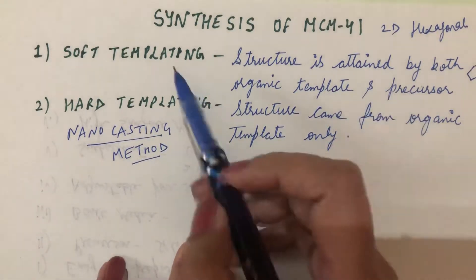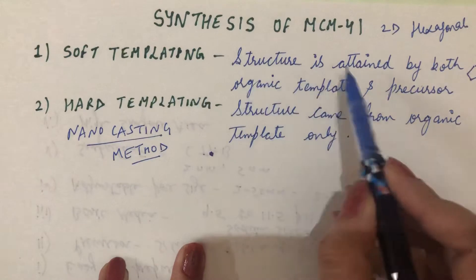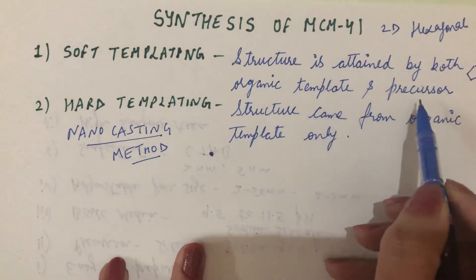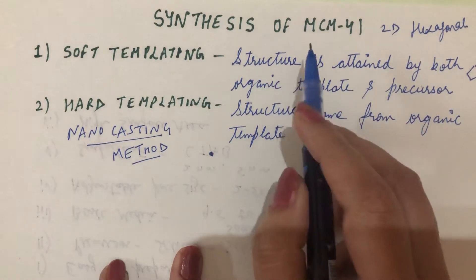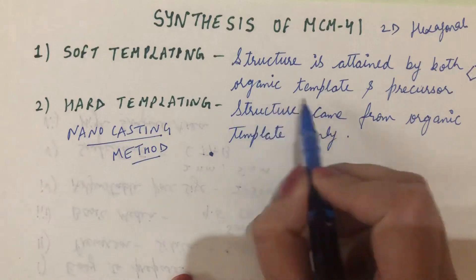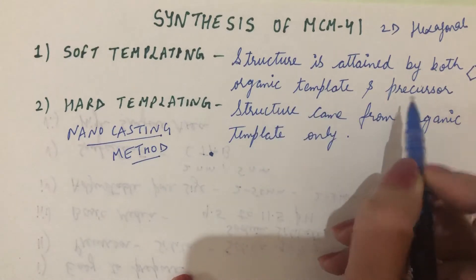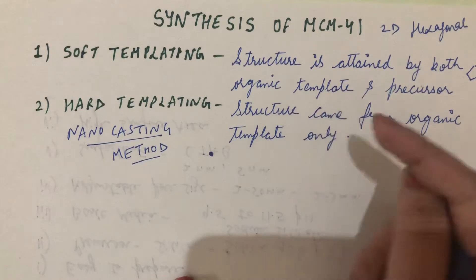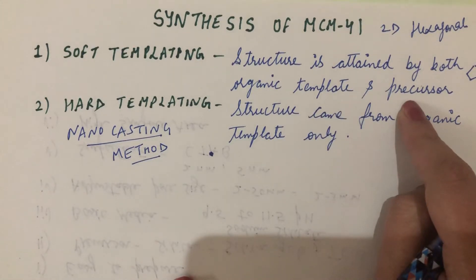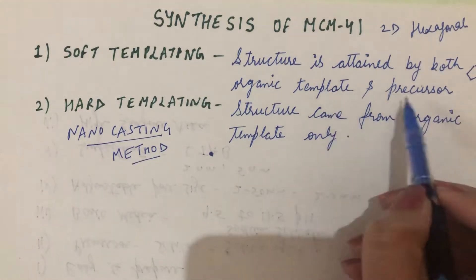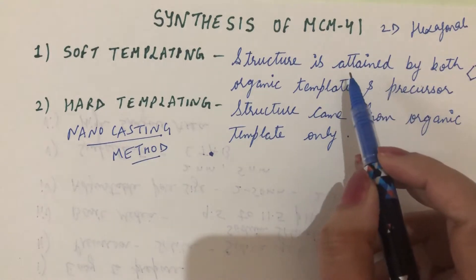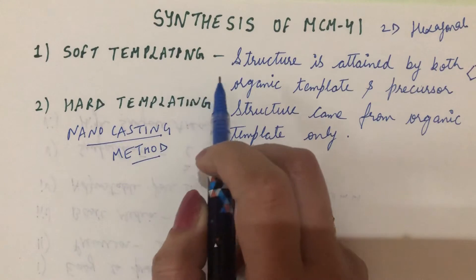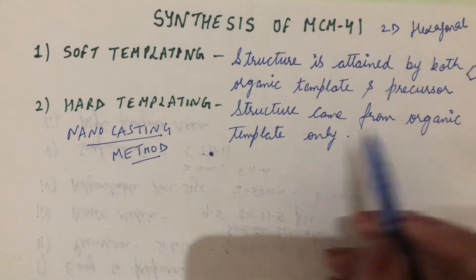In the soft templating method, the structure is attained by both the organic template and the precursor. For synthesis we take two things: one is the organic template and the other is the precursor. The organic template is any carbon source, and the precursor is a silica source. Since MCM-41 is a silica material, if both these things simultaneously give the structure of the material, it is called soft templating.